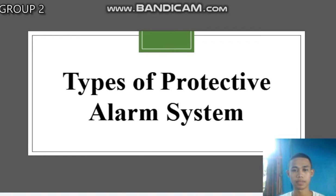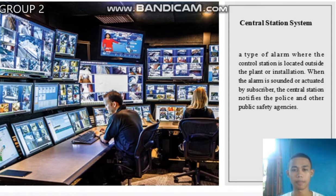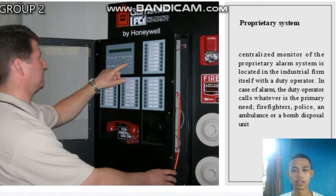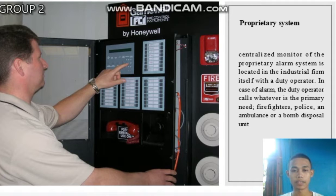Types of protective alarm systems: The first is the central station system — a type of alarm where the control station is located outside the plant or installation. When the alarm is sounded or activated by a subscriber, the central station notifies the police and other public safety agencies. The second is the proprietary system. The centralized monitor of the proprietary alarm system is located within the industrial facility itself with a duty operator. In case of alarm, the duty operator calls for whatever is needed: firefighters, police, ambulance, or a bomb disposal unit.